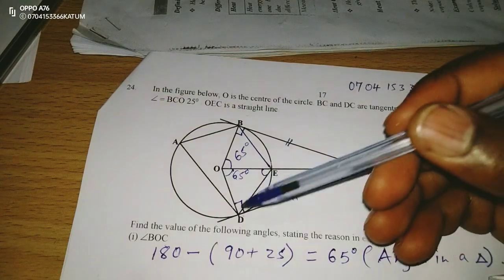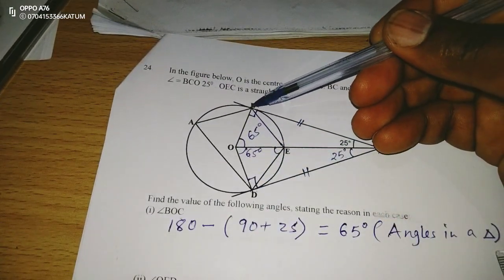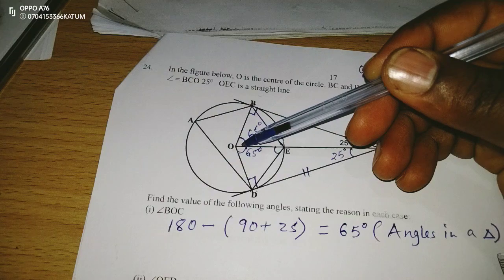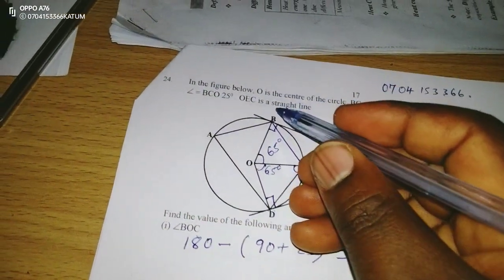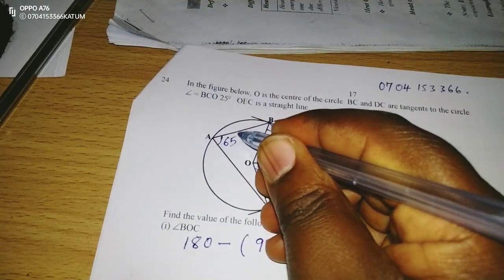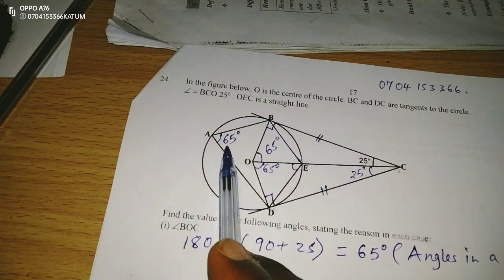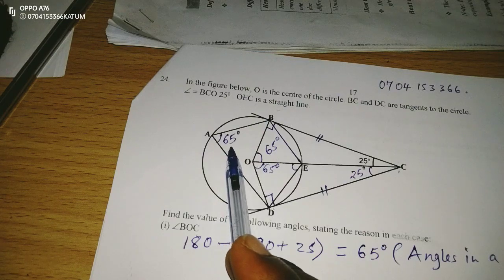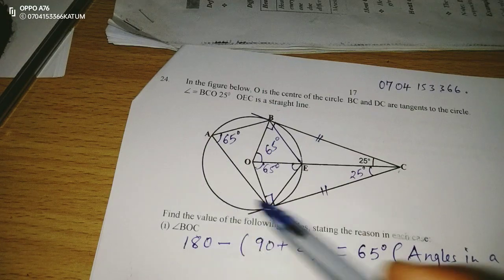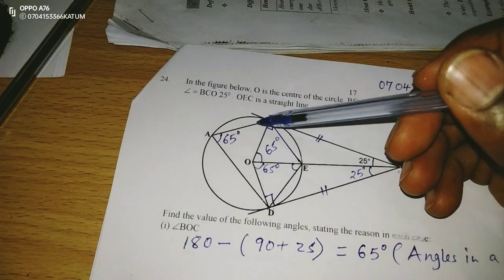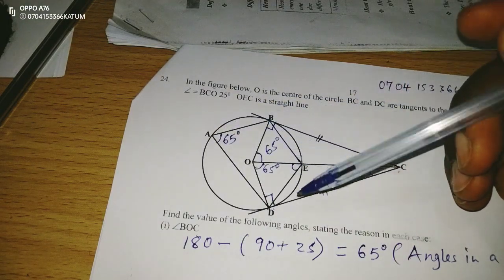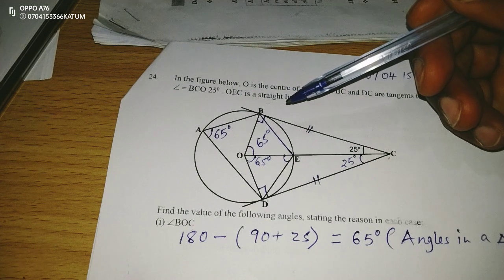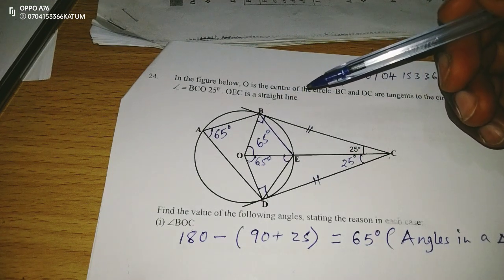Now we can talk about chord BD producing an angle of 130 at the center of a circle. That means the same chord should produce a half, which is 65, at the circumference. So the angle here is 65 degrees. The chord which is making an angle of 65 is also making another angle at a point here.